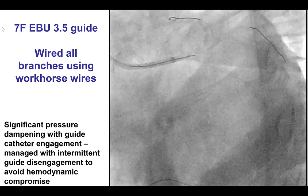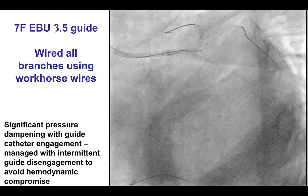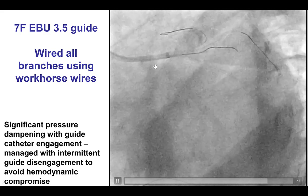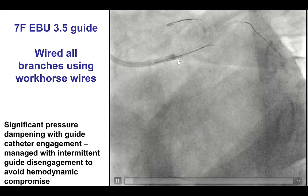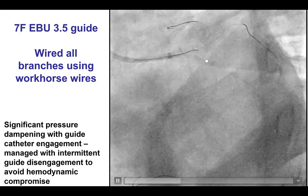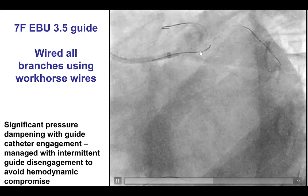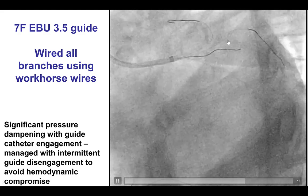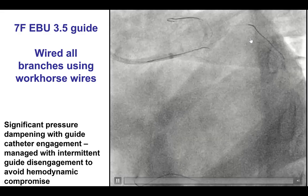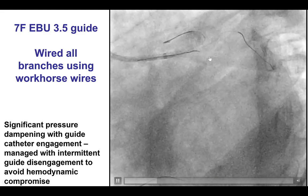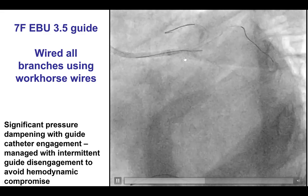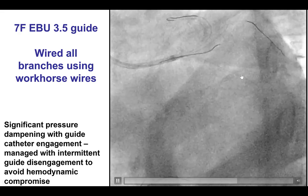We used a 7-French EBU 3.5 guide. We had to intermittently engage and disengage the guide to minimize dampening and potential hemodynamic compromise. We then used workhorse wires to wire into all branches: the LAD, the superior Ramus, the inferior Ramus — which was challenging to wire — as well as the dominant circumflex branch.